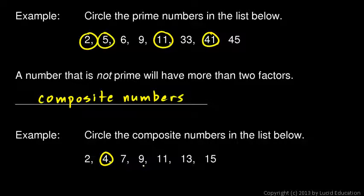7 is prime, 9 is composite. In all of these cases, if you can find any numbers that multiply to give you this number, other than 1 and the number itself, then it is composite. So 9 is 3 times 3.